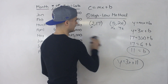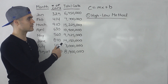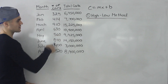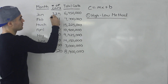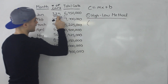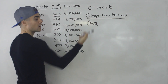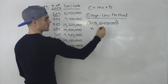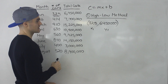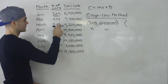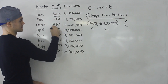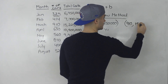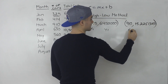Knowing that, the high-low method is pretty easy. With the high-low method, you look at the data for the highest output and the lowest output. The lowest output is 325, so we write 325 as the x value and the respective cost, 6,450,000, as the y value — that's like x1, y1. Then for the highest output, that's 910, with a respective cost of 15,225,000 — that's like x2, y2.